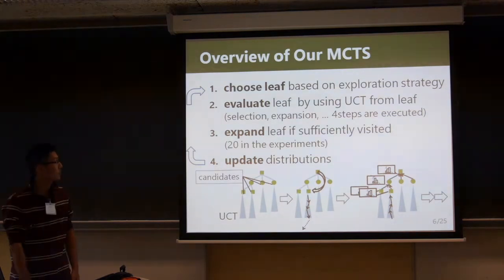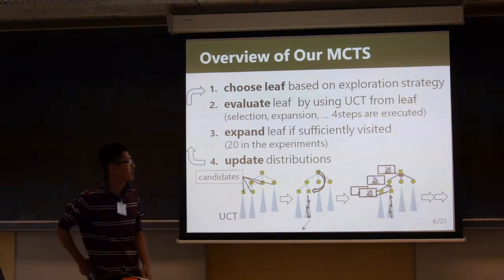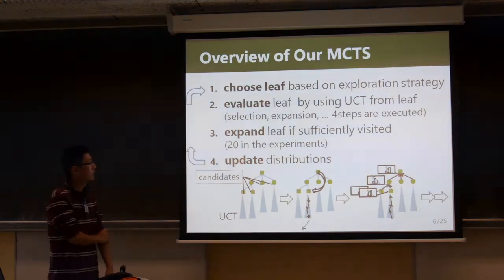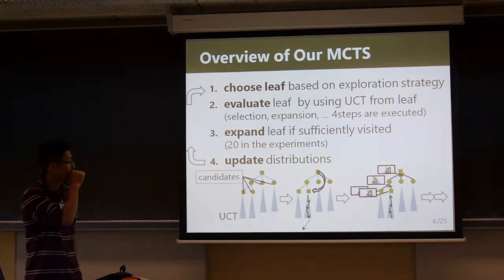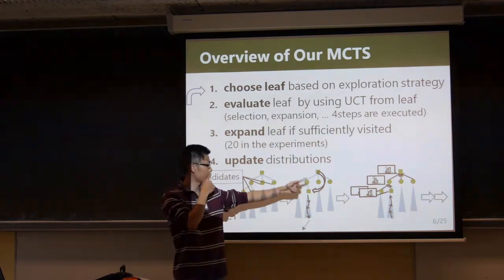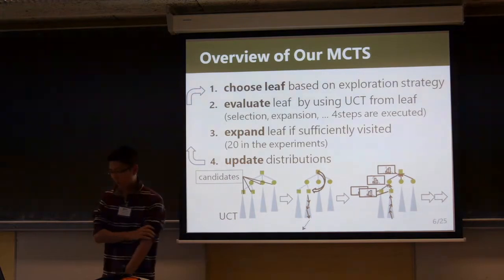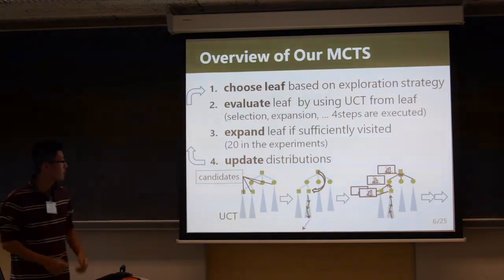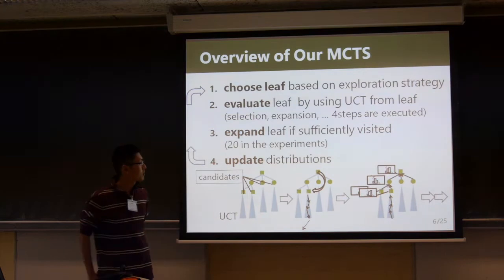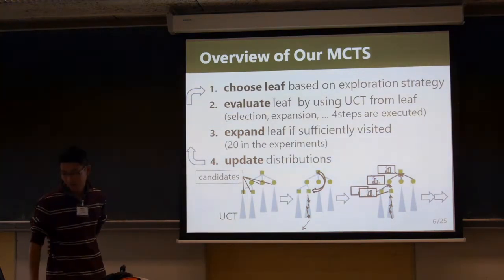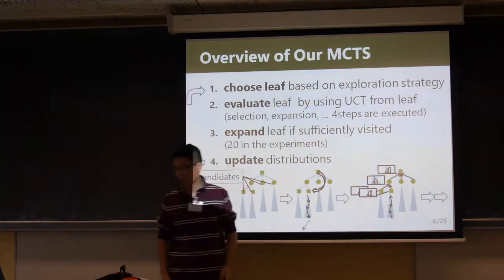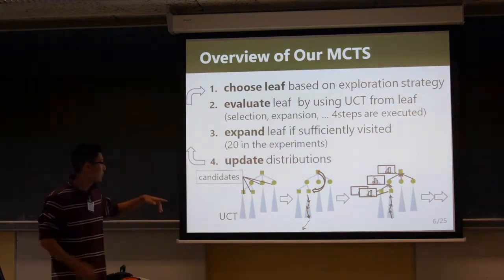Our algorithm must choose a node based on the exploration strategy. Using UCT from node B to C, UCT searches further. It then updates the distribution using mean or max, and integrates these four steps.